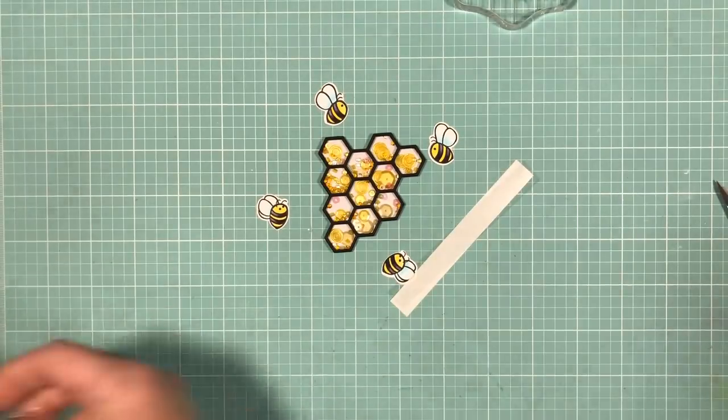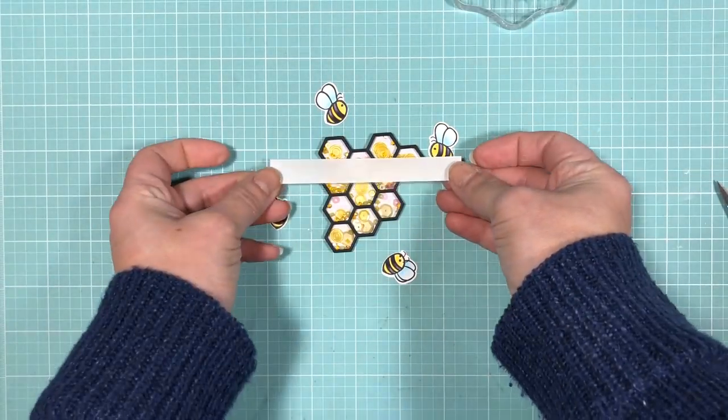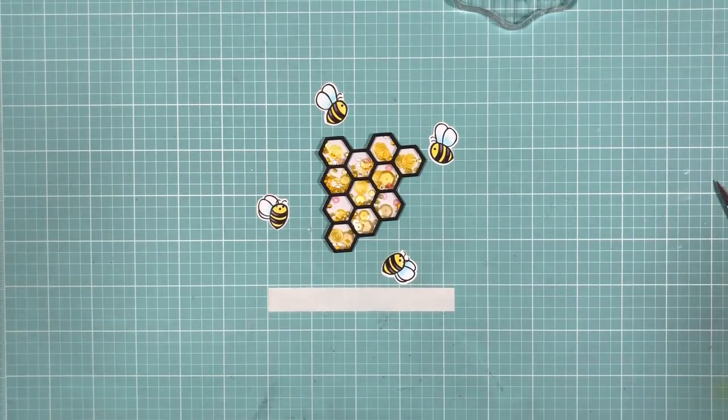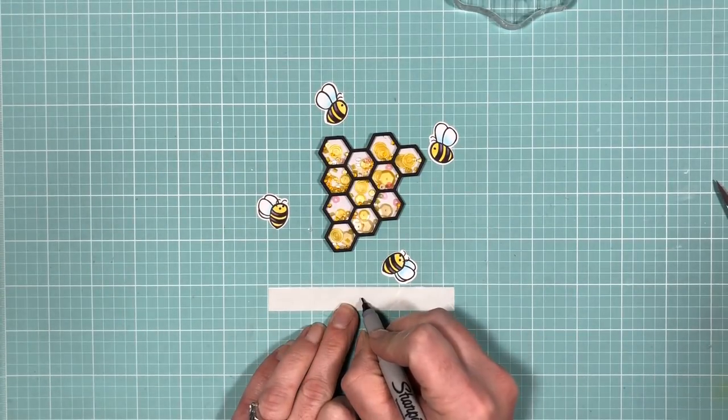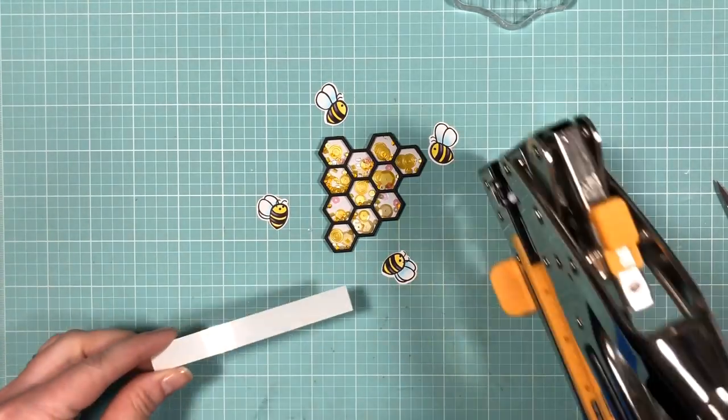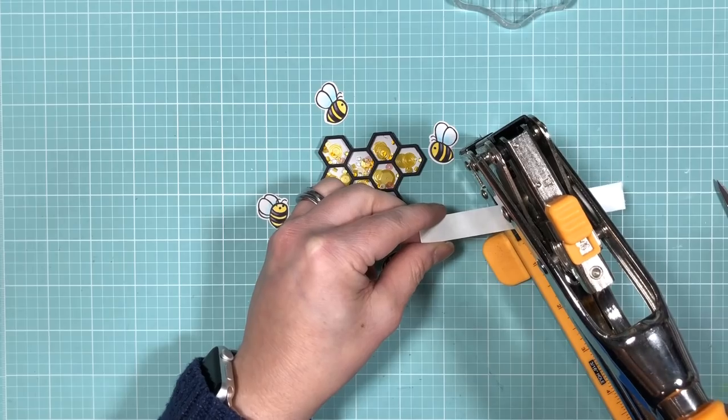To create the spinner portion of the card, I'm just using the scrap piece of acetate and I'm just making sure it's long enough to spin around the shaker portion. And here I'm just finding the center of the acetate and making a little mark and I'm just going to create a hole using a hole punch.